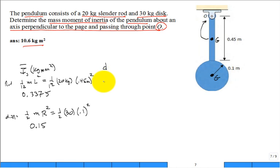It would be 0.45 divided by 2. 0.225, right? 0.225 meters.